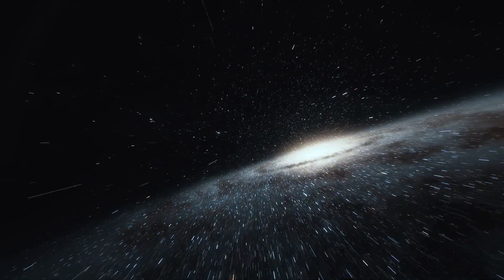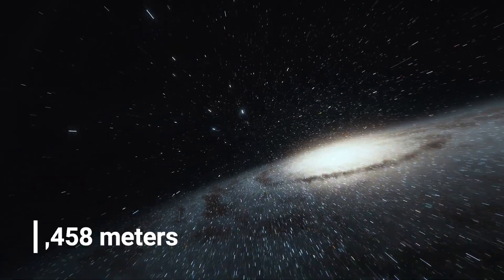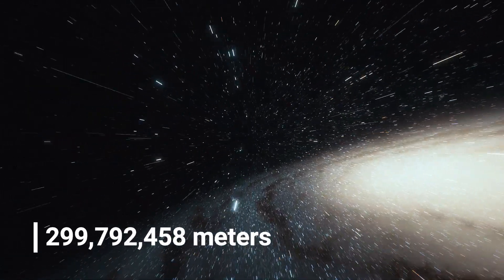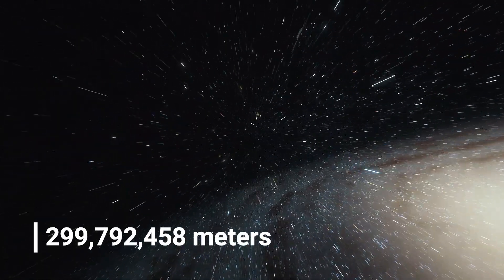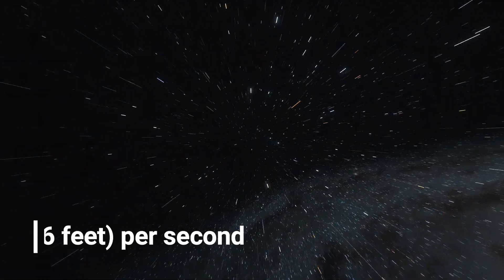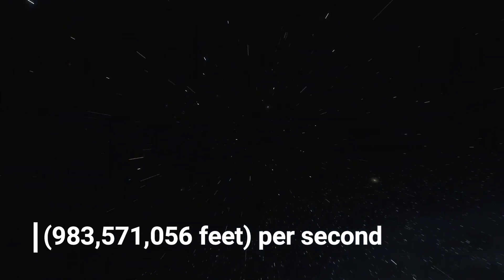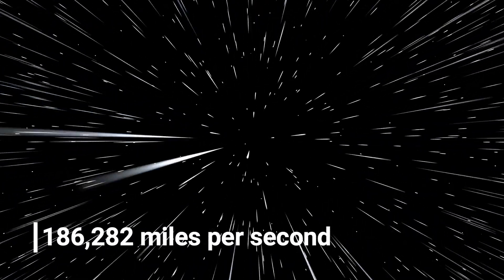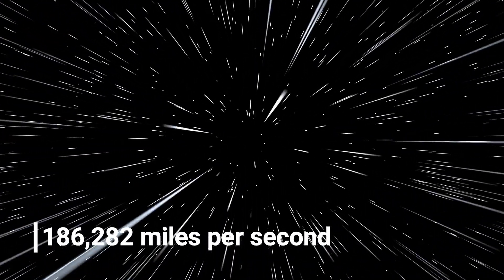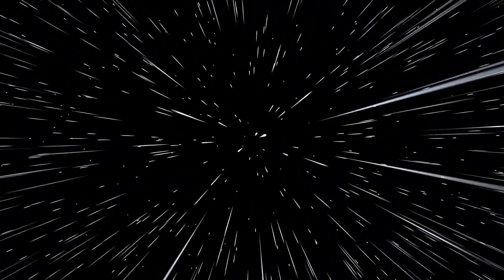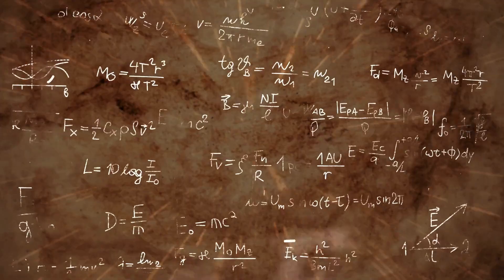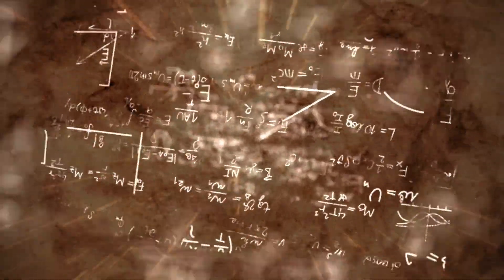The speed of light traveling through a vacuum is exactly 299,792,458 meters per second or 983,571,056 feet per second. That's about 186,282 miles per second, a universal constant known in equations as C or light speed. According to Albert Einstein's theory of special relativity, on which much of modern physics is based, nothing in the universe can travel faster than light.